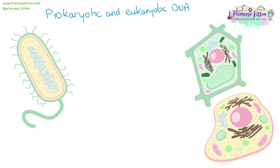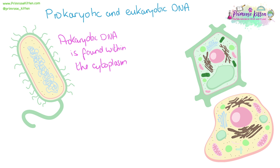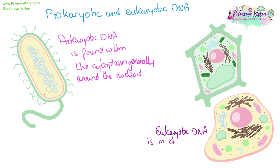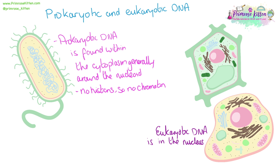The DNA within prokaryotic and eukaryotic cells is stored differently and does different things. Prokaryotic DNA is found within the cytoplasm in an area called the nucleoid, whereas eukaryotic DNA in plants and animal cells is found within the nucleus. Prokaryotic DNA is not wound around any histones, but within eukaryotes there are histones, so you will get a DNA-histone complex.